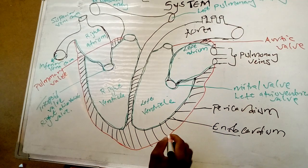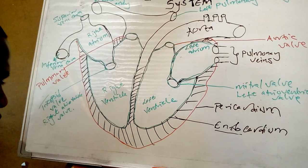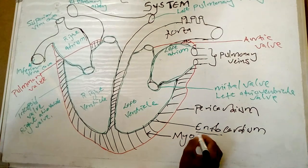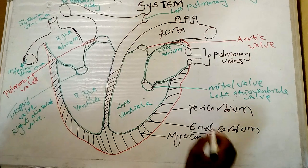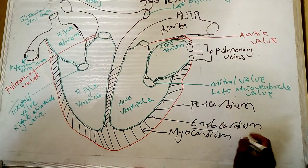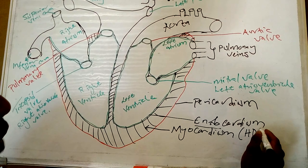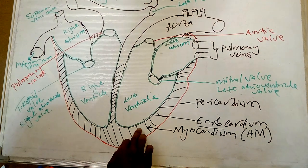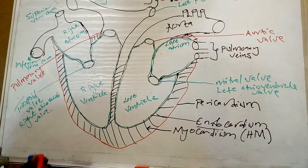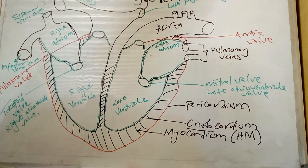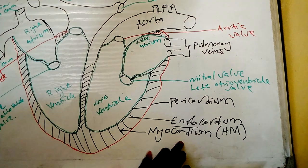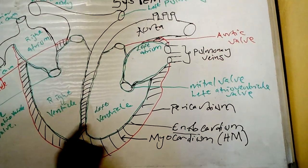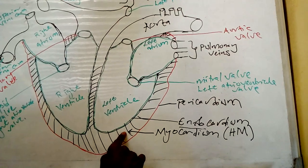The myocardium is very much important. It is the middle layer of the heart, also known as the heart muscle. This muscle is very important for contraction of the ventricles. If the myocardium becomes diseased or is not working, someone can have heart failure because the ventricles will fail to contract.